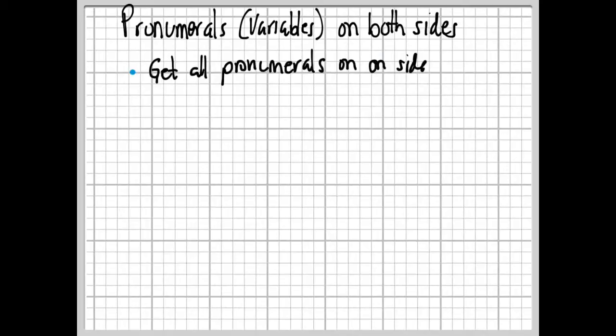The little rule that we're going to do here is quite simple: get all those pronumerals on one side the way we like it. So here's an example: 5X minus 2 equals 3X minus 4. We have X's on the left and X's on the right. What are we going to do? Well, we want to get them all on one side.